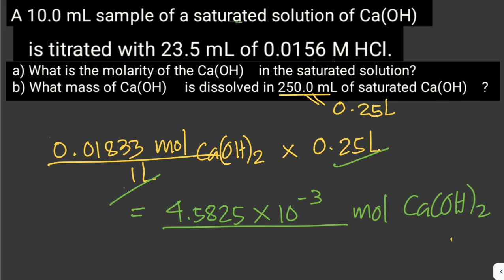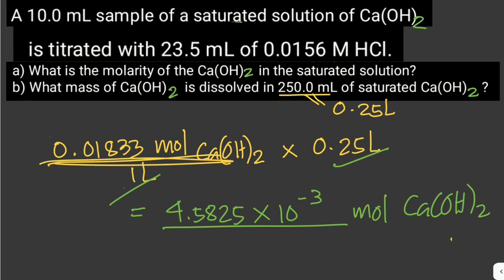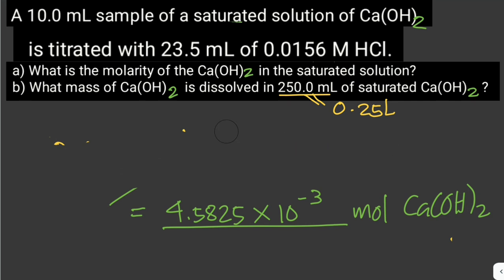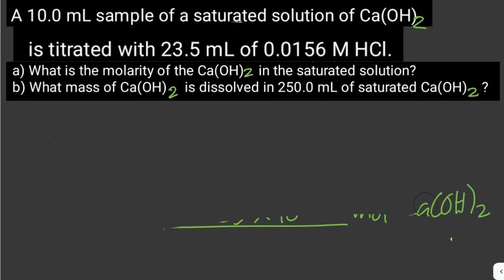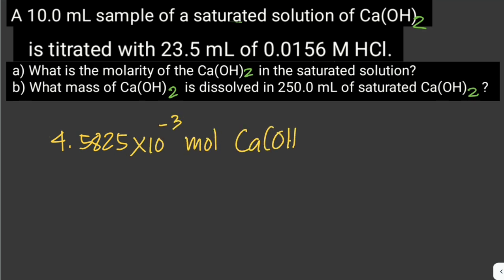Now that we have the number of moles of calcium hydroxide, we can multiply by the molar mass of calcium hydroxide to get the mass. So that is 4.5825 × 10⁻³ moles of calcium hydroxide multiplied by the molar mass, which is 74.1 grams per mole of calcium hydroxide.